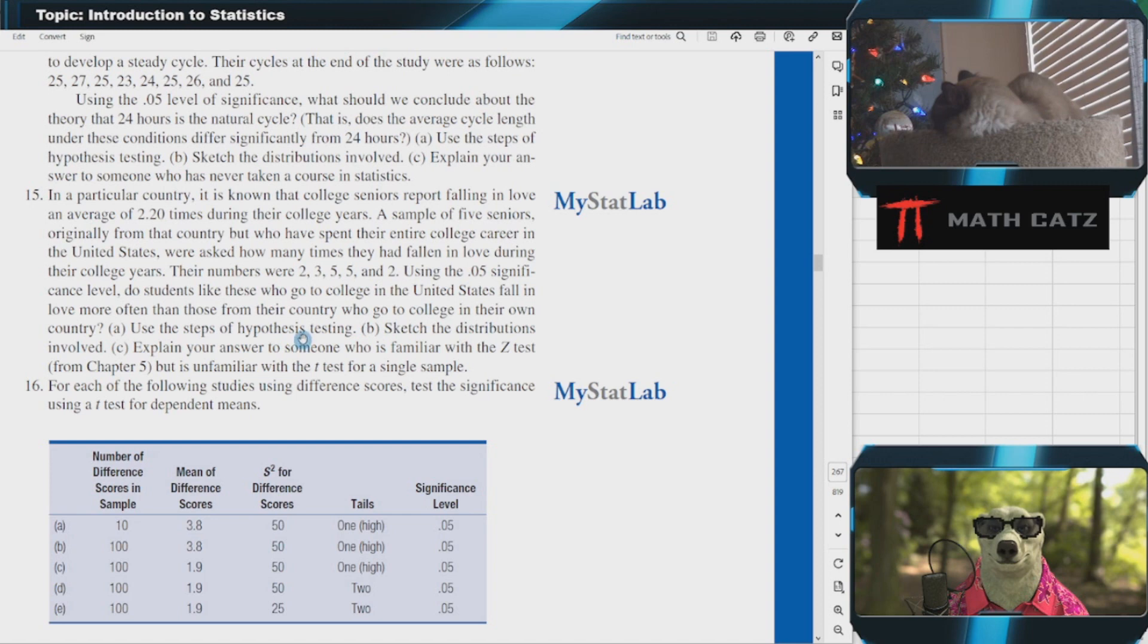I apologize that my camera is not really working today, but we'll continue. Let's think about this. I have two populations: college seniors from this country that go to college in the U.S. versus college seniors from this country that do not go to college in the U.S.